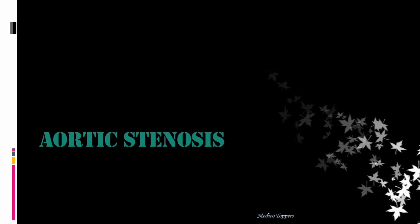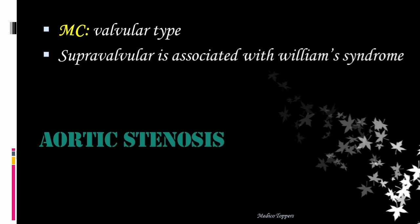Now we are going to see regarding aortic stenosis. The most common type is valvular, and we can have the supravalvular type which is seen in Williams syndrome.